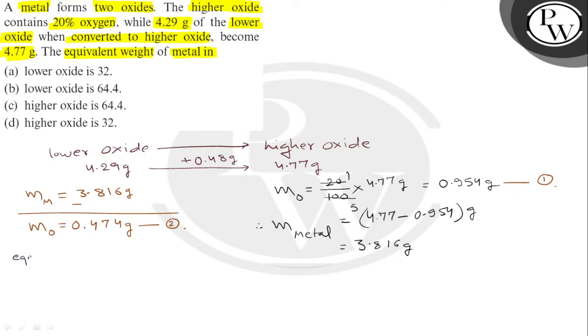So, what should be equivalent weight of metal in this case? 0.474 gram oxygen combines with 3.816 gram of metal. What mass of metal is required to combine with 8 grams of oxygen? This mass will be the equivalent mass.